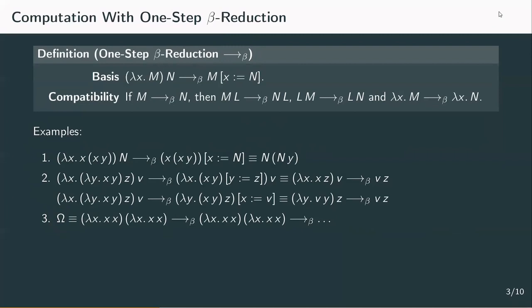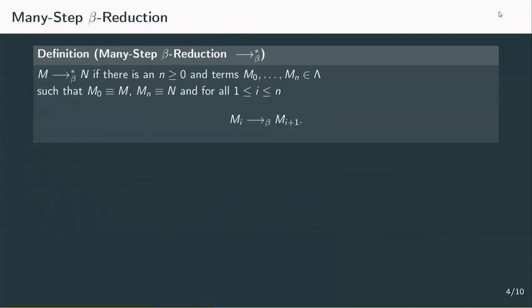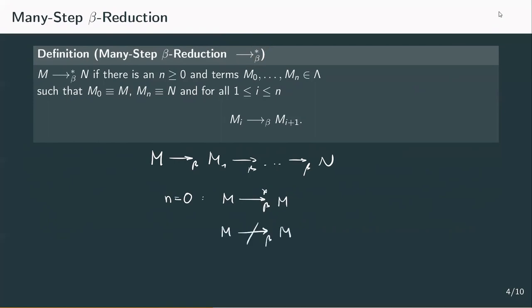Before we get deeper into the consequences of such behaviour, we still have to define the many-step reduction. m was one-step beta reducible to a term if there was a redex in m which we could contract. Similarly, m is many-step beta reducible to n if there's a chain of one-step beta reductions starting from m to m1, to m2, and so on all the way to mn. We denote this by adding a star to the one-step reduction arrow, similar to the notation in regular expressions. An interesting fact is that the number of one-step reductions in this chain can be zero — meaning m is many-step beta reducible to itself, even though it's not one-step beta reducible to itself. And if m is already one-step reducible to n, it's also many-step reducible to n. We say that many-step beta reduction extends one-step beta reduction.